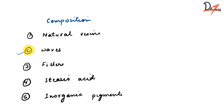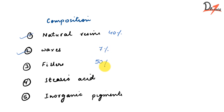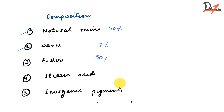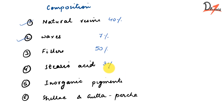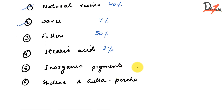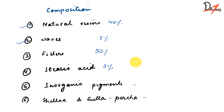Now let us talk about the composition of dental compound. The major components are waxes and resins. Natural resins are 40%, waxes are 7%, fillers are around 50%, and stearic acid is 3%, with inorganic pigments in traces.